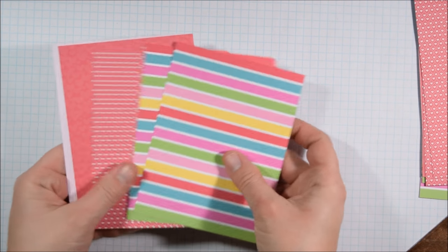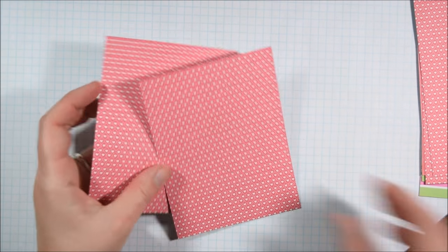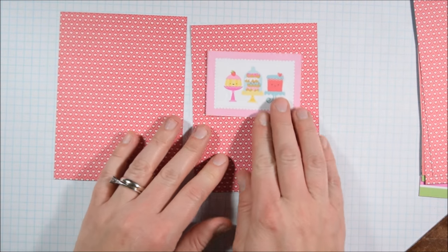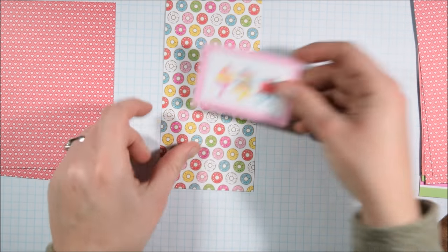And then I also took the donuts paper because that one's a little bit more of a bold pattern, and I simply cut it into three inch strips because I'll want to use that as an element on the card.